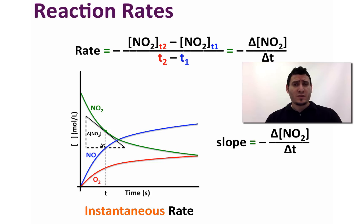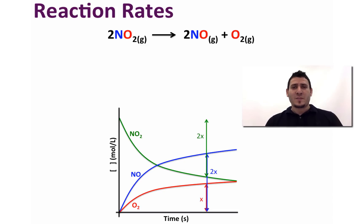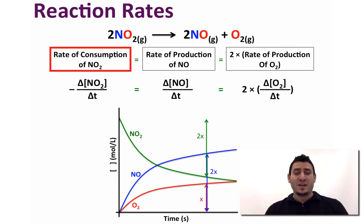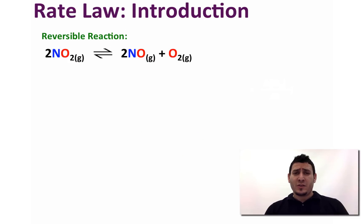The coefficients in a balanced chemical reaction determine the relative rates of consumption of reactants and generation of products. For this reaction, we can see that the rate of consumption of nitrogen dioxide is equal to the rate of production of nitrogen monoxide and equal to twice the rate of production of oxygen.